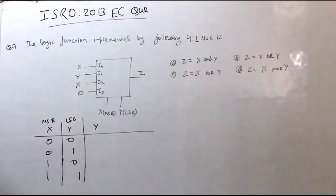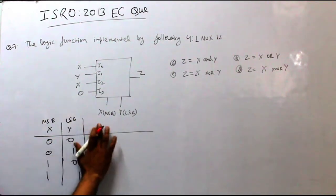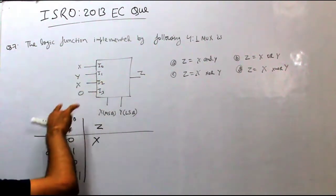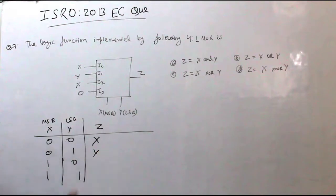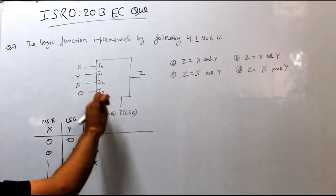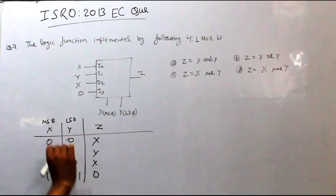When we have 0,0, the output will be x. When we have 0,1, we get y. When we have 1,0, we get x. When we have 1,1, we get 0.